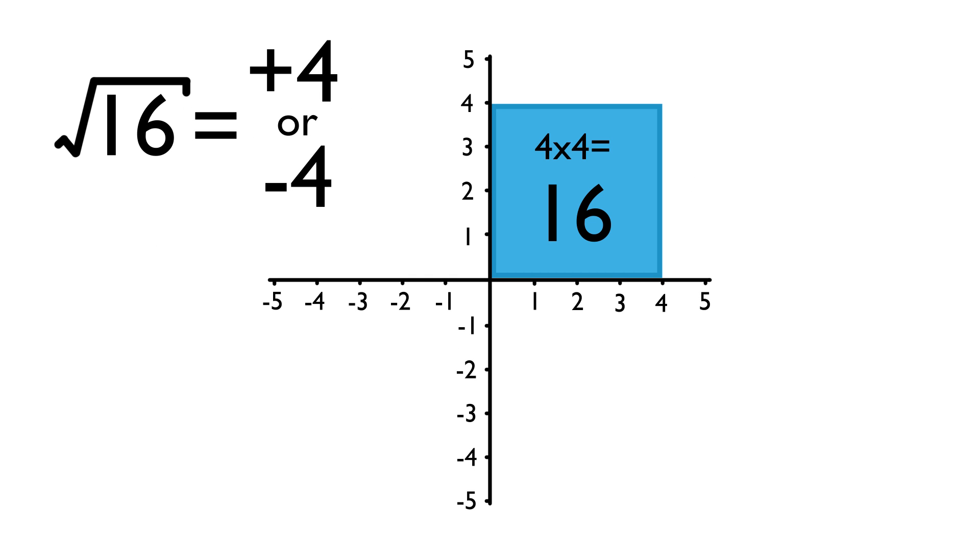This is because minus 4 squared also gives you 16, because it's minus 4 times minus 4, and a negative number times a negative number equals a positive number. So you don't know which one it is, so people normally just take the positive.